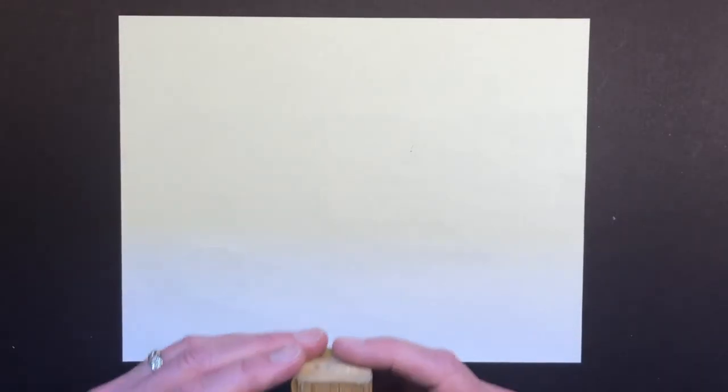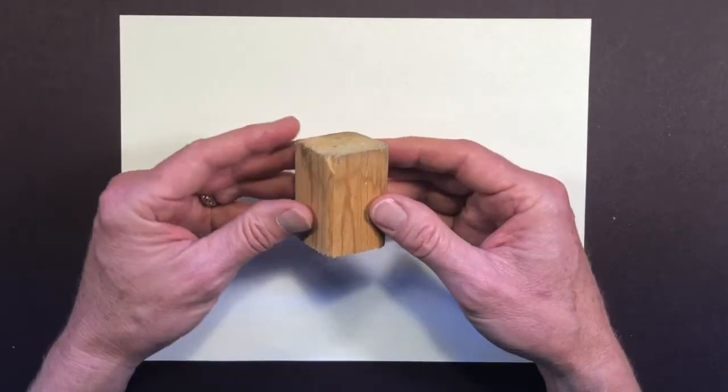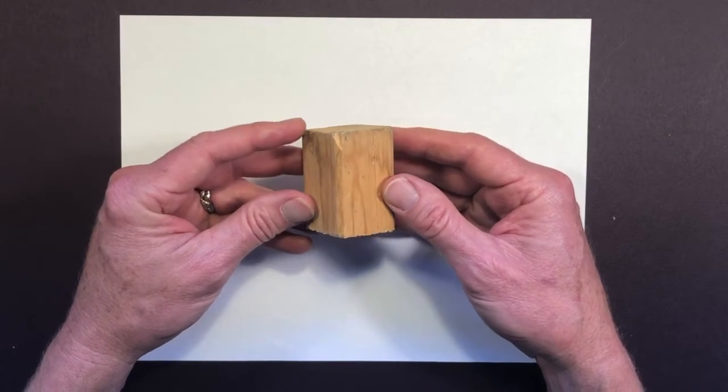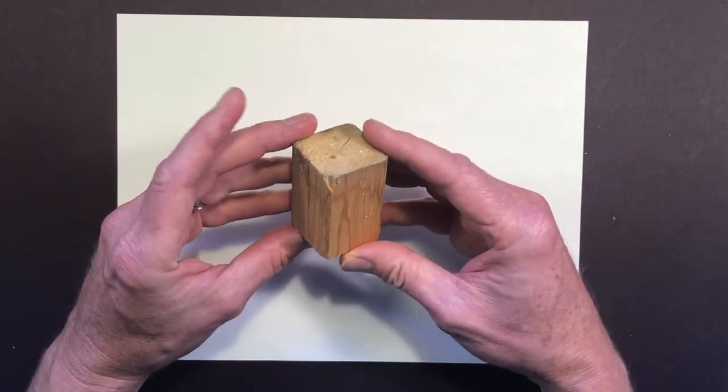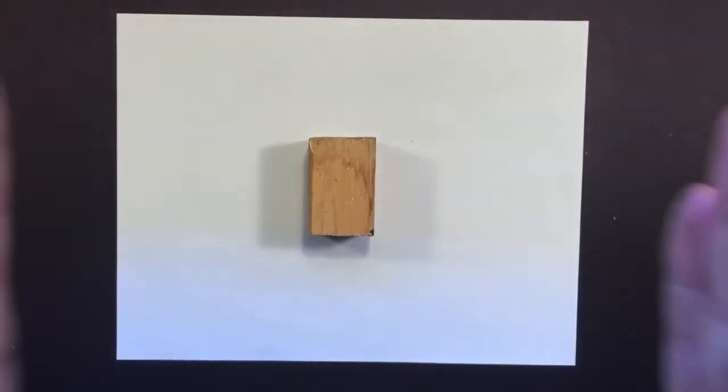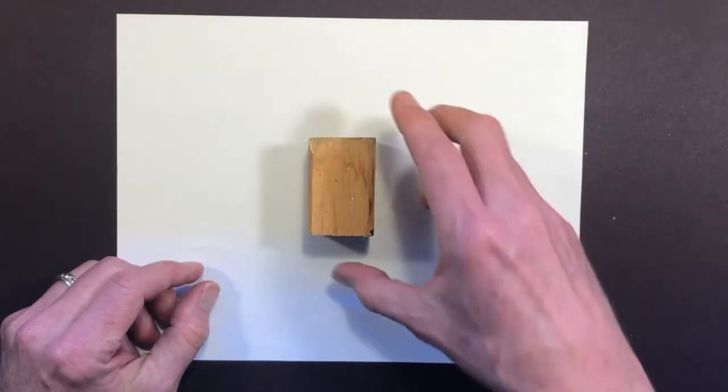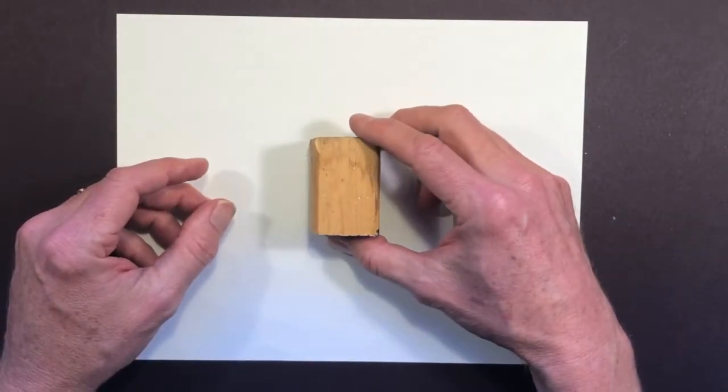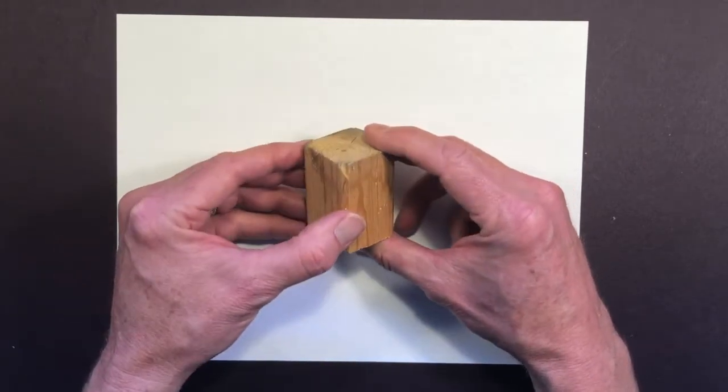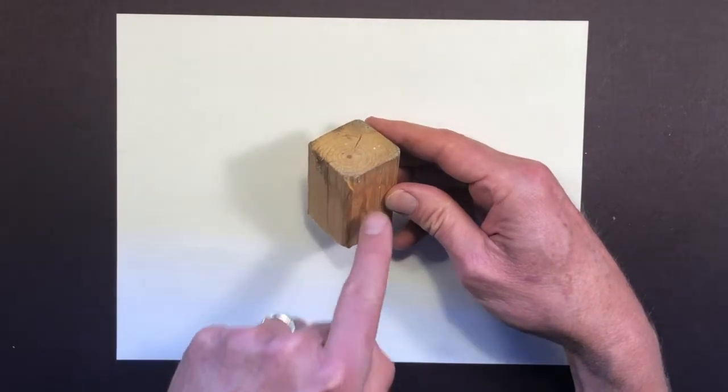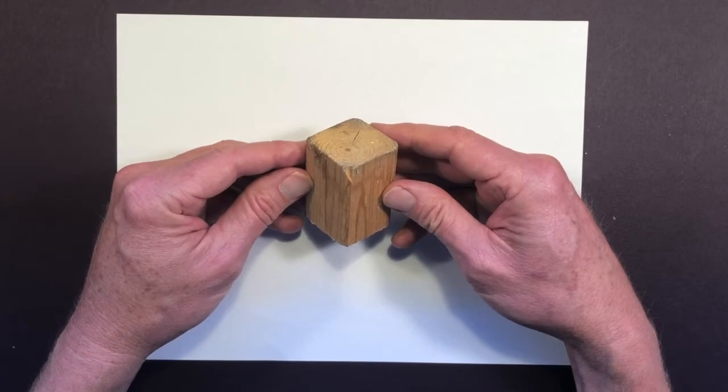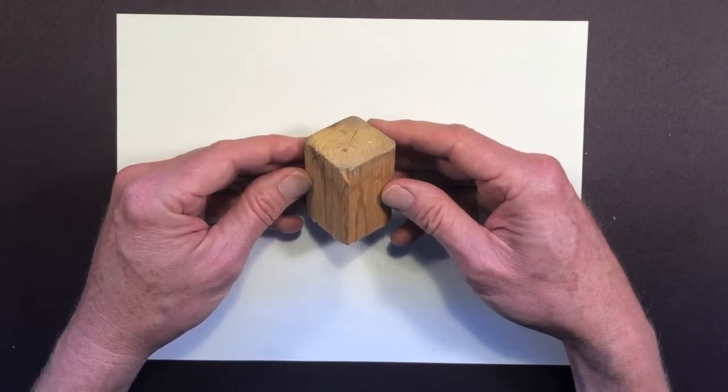When I started to think about how to teach drawing in three dimensions, I thought it would be best to actually hold something three-dimensional and look at what it looks like. So here's a little cube that I have, a little piece of wood. And if you look at it straight on it looks flat, like a piece of paper. But as soon as you start to tilt it you can see that it has two sides. And then if you tilt it again you can see that it has three sides. Three dimensions.